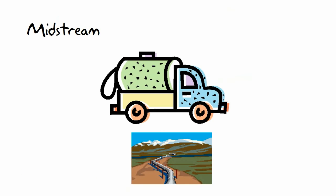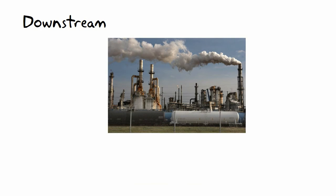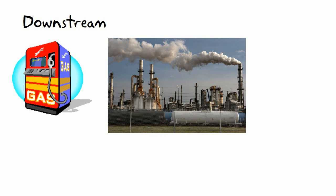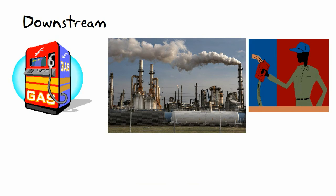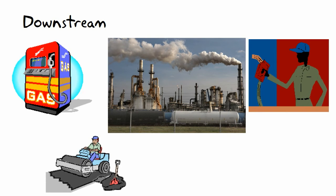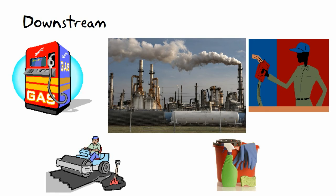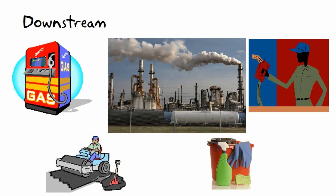Midstream is the part where the hydrocarbon is transported and stored. Downstream is where the industry refines the oil or gas into consumer products like gasoline or other fuels, heating oil or gas, asphalt, and consumer petrochemicals that go into things ranging from plastics, detergents, fertilizer, and many other things. These products are then marketed, distributed, and sold to and through consumer outlets.